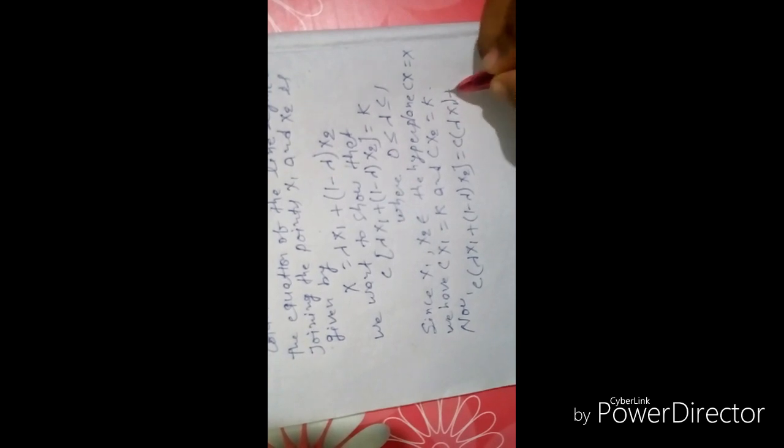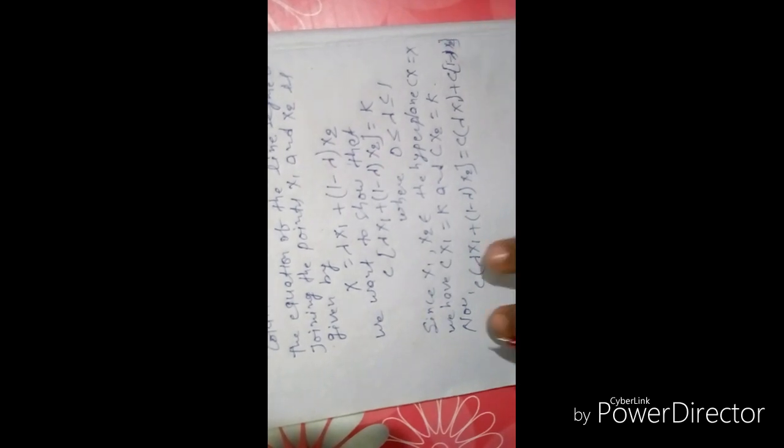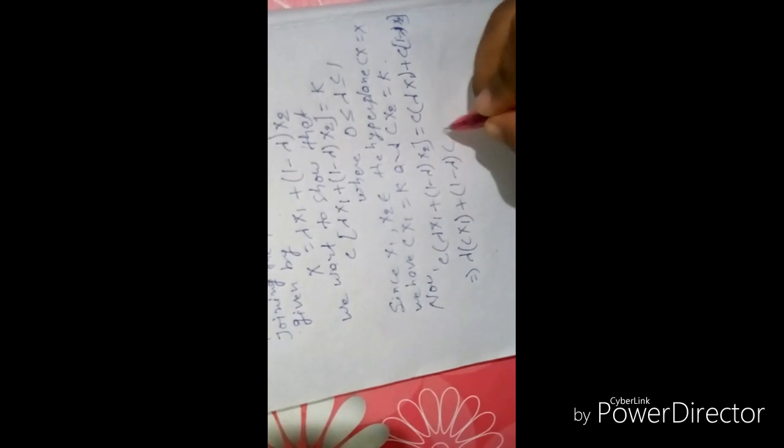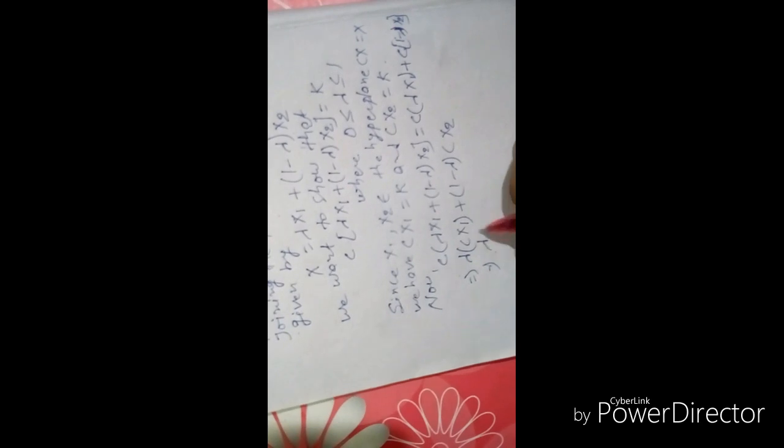Now, C[lambda x1 + (1 - lambda)x2] = C(lambda x1) + C((1 - lambda)x2) = lambda Cx1 + (1 - lambda)Cx2 = lambda K + (1 - lambda)K = K.